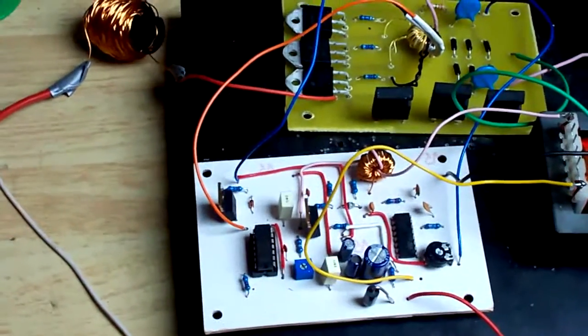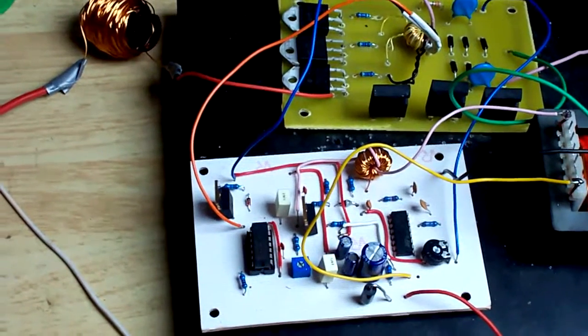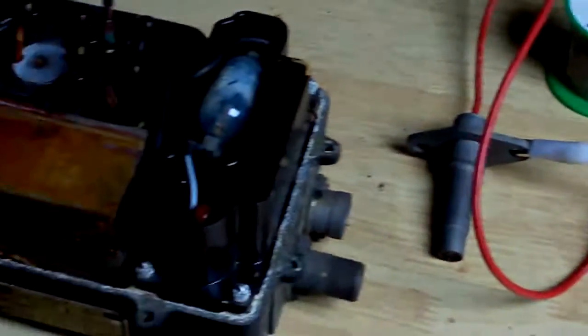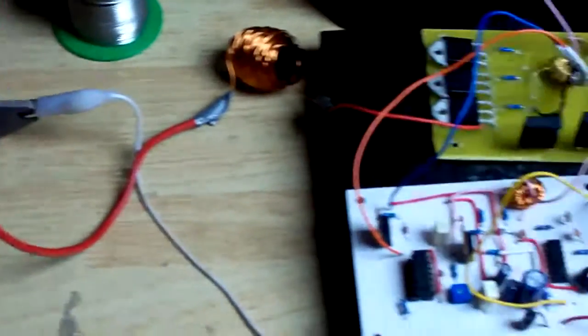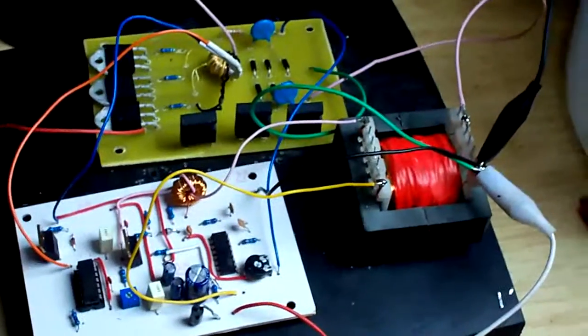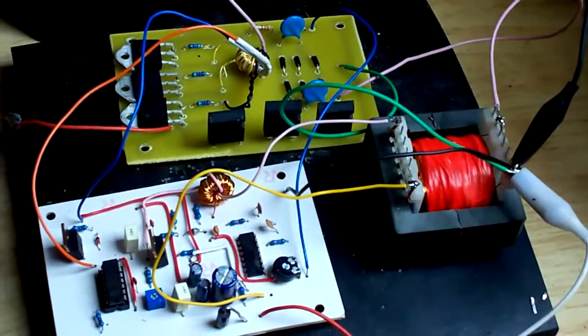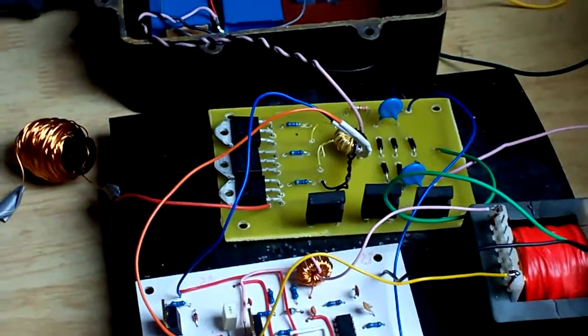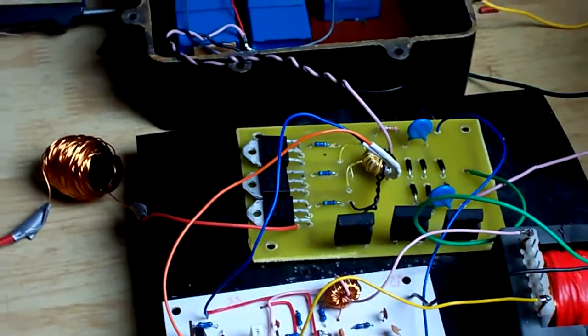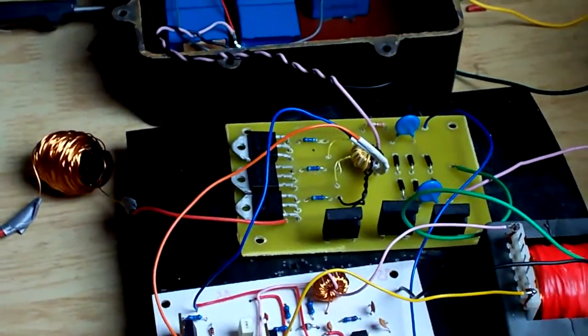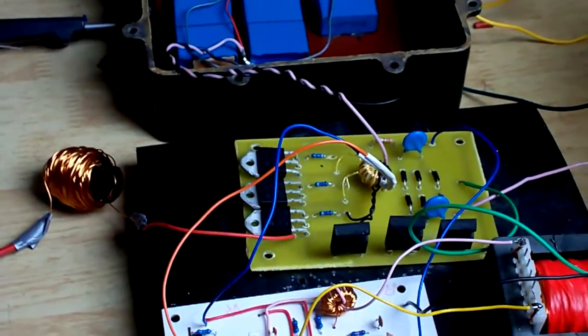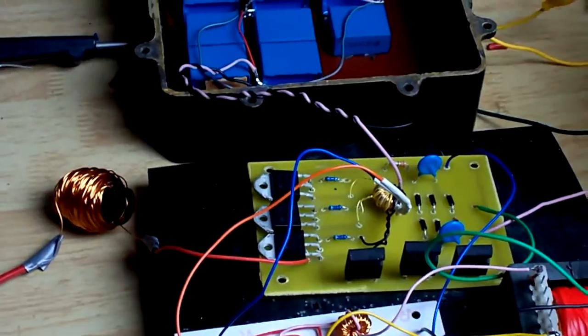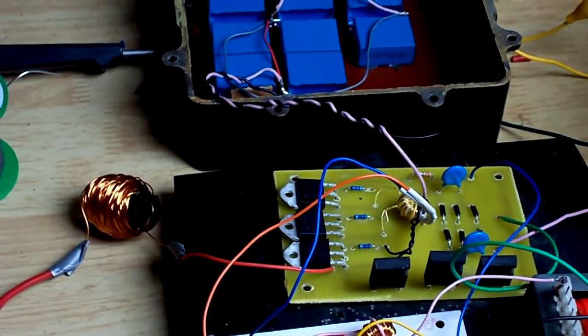Which basically chops up the DC similar to the trembler switch we had in the older box. We have a transformer like in the other box, and then you have the EHT extra high tension silicon rectifiers and diodes and a voltage multiplier which turns it back into a high voltage DC output.